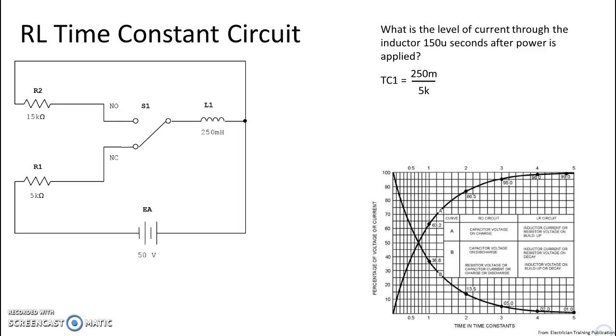So we start there. Time constant one is going to be 250 milli divided by 5k, which is L over R for the portion of the circuit that is energizing, and we get 50 microseconds. Now of course we are going to compare by taking 150 micro divided by 50 micro.